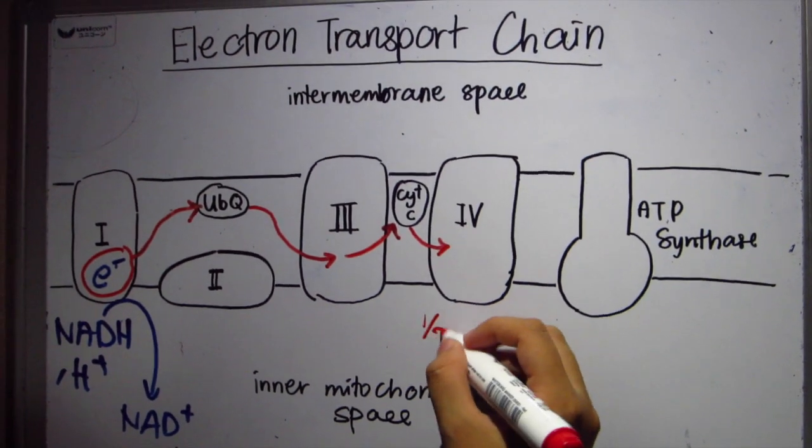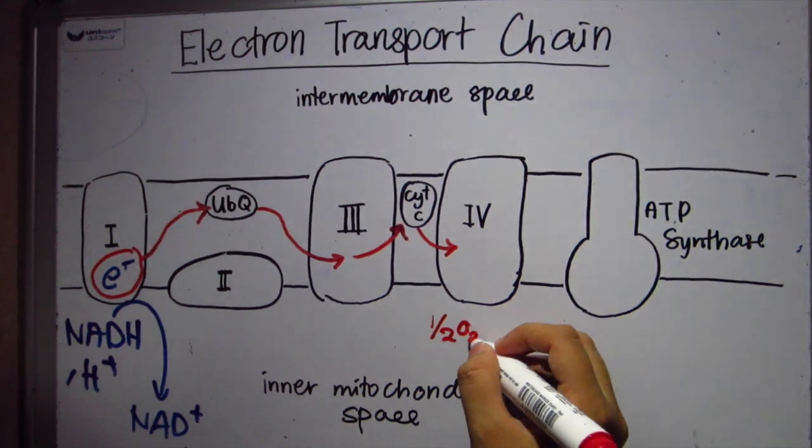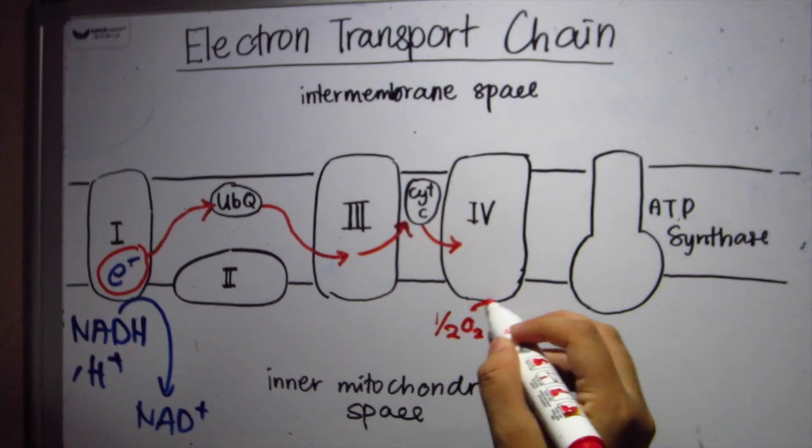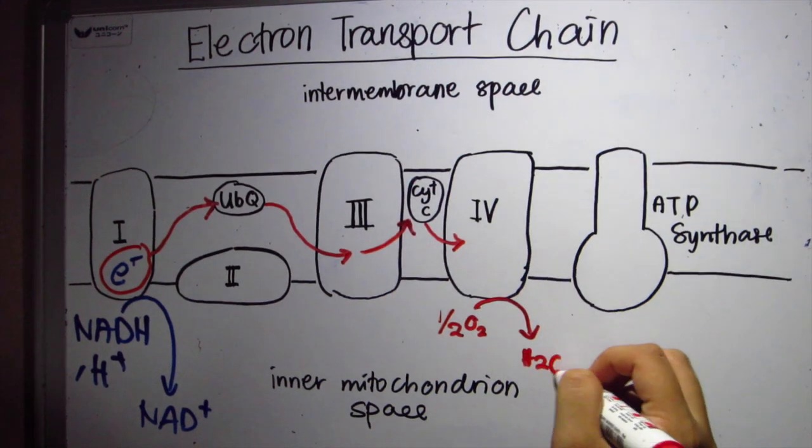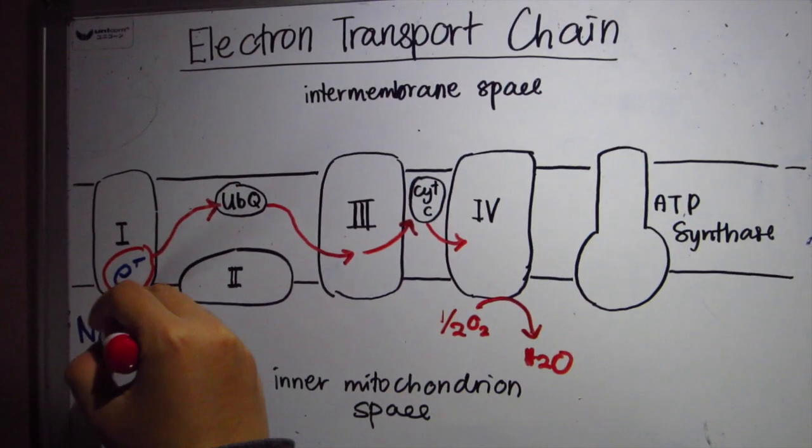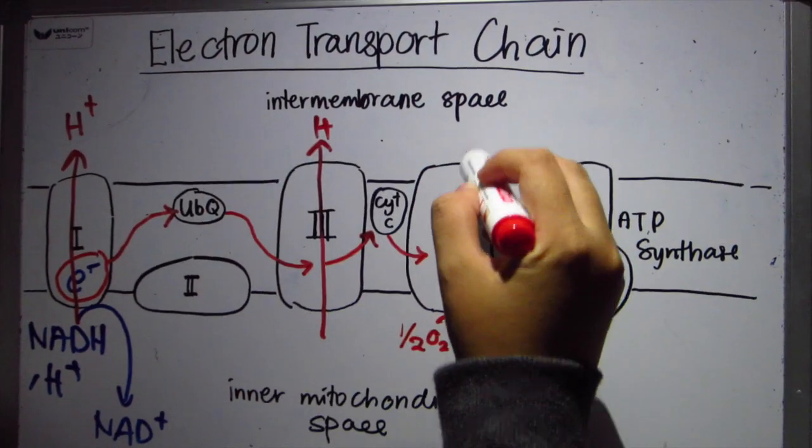Finally, the acceptor is oxygen. It gains electrons, produces H2O. All the complexes will pump H+ to the intermembrane space.